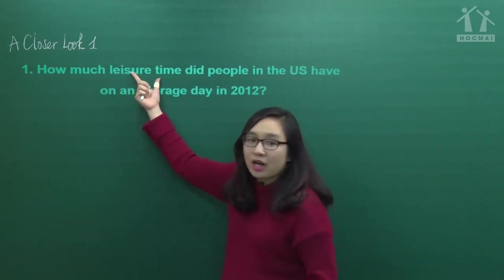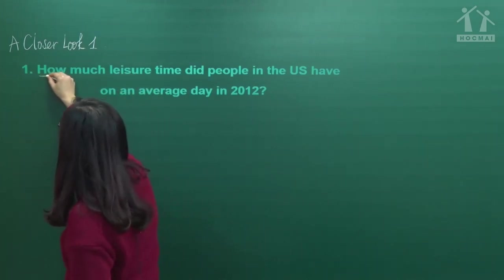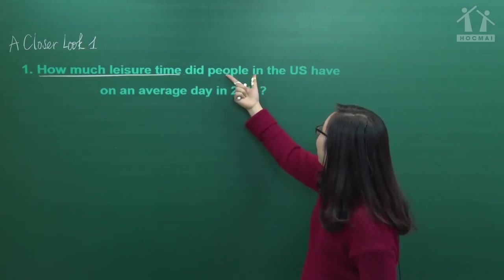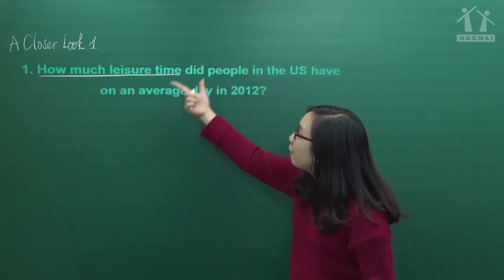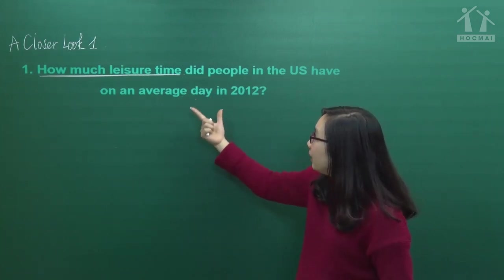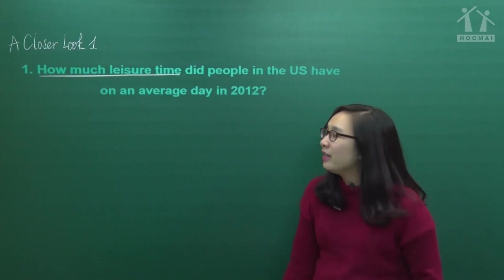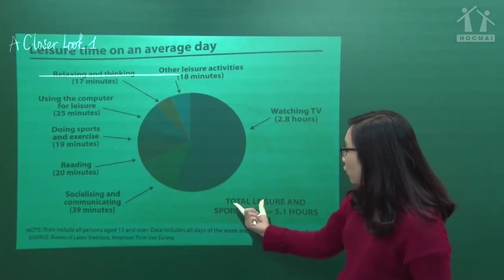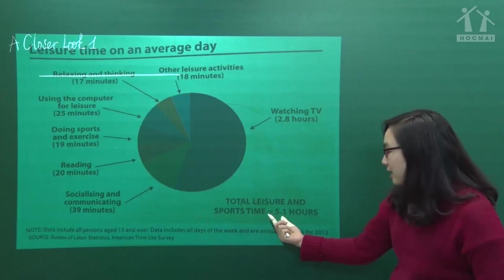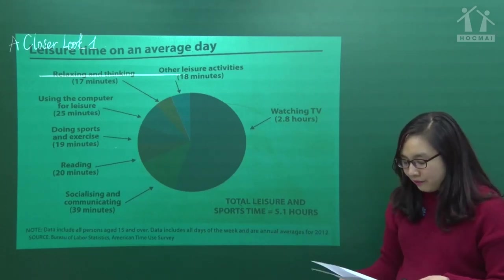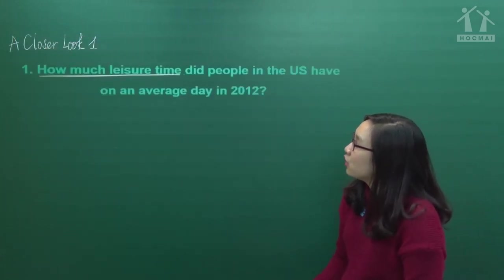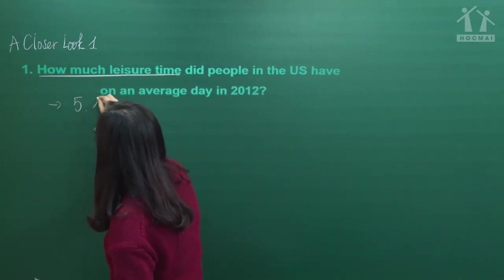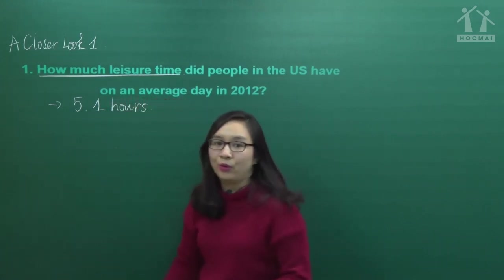Khi chúng ta trả lời, các bạn phải tập trung vào từ để hỏi: 'how much leisure time' - bao nhiêu thời gian thư giãn - did people in the U.S. have on an average day in 2012? Chúng ta vừa xem biểu đồ - the total leisure and sport time is 5.1 hours. Vậy câu trả lời số 1 là 5.1 hours - 5.1 giờ đồng hồ.